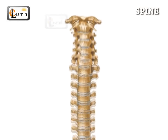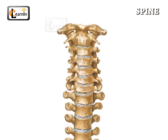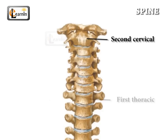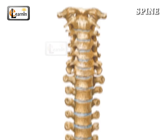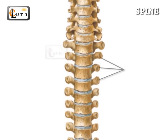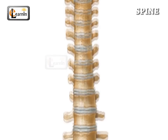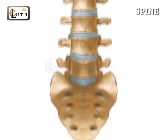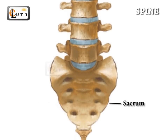The vertebrae increase in size from the neck downwards — that is, from the second cervical to the first thoracic. There is a slight decrease in the next three vertebrae, and then again there is a gradual increase in size until the sacrum vertebrae.